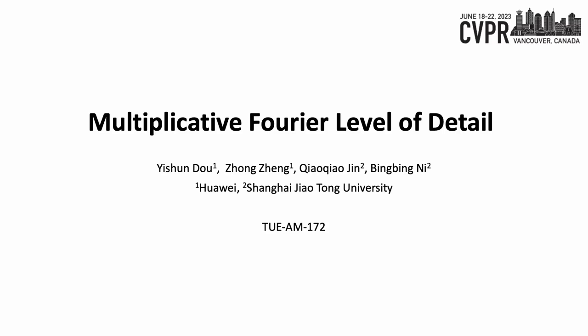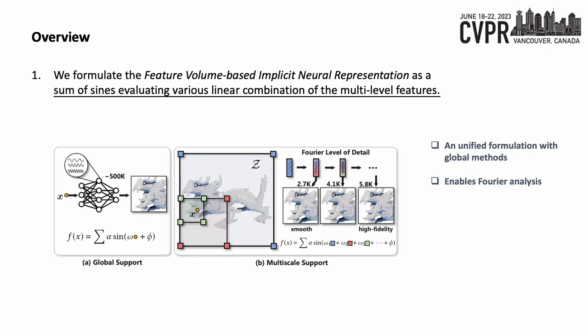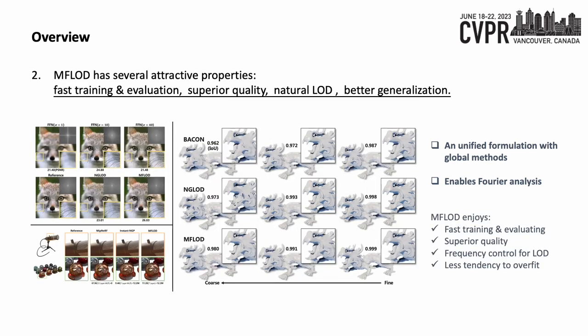Hello everyone, I'm Ishun. This talk is about Multiplicative Fourier Level of Detail, a mathematical analysis framework of the principle of multiscale hybrid representation. We develop MFLOD on multiresolution feature volumes, where each level's feature is modulated by a sinusoidal function and then element-wise multiplied by a linear transformation of the previous layer's representation in a layer-to-layer recursive manner. In contrast to previous hybrid methods, MFLOD can be elegantly characterized as a linear combination of sine basis functions with varying amplitude, frequency, and phase upon the learned multilevel features, thus offering great feasibility in Fourier analysis. MFLOD has several attractive properties, such as fast training and evaluation, superior quality, natural level-of-detail, and better generalization.